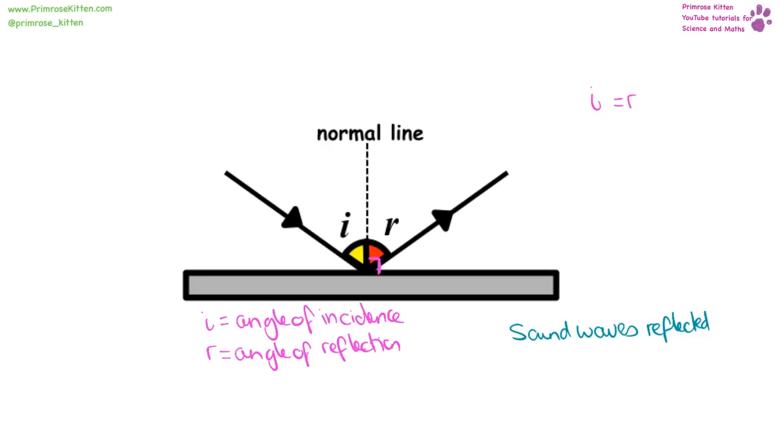If we have a sound wave instead of a light wave that is being reflected, we are going to get an echo.